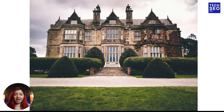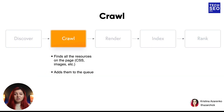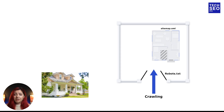Imagine you're coming to a huge mansion you discovered. It's amazing and beautiful, and you're very excited about all the photos you're going to take — but there is a high fence around the mansion, and in order to get inside you need to go through the gates. That's what robots.txt does. It's like the gates of your website that show Googlebot if it's allowed to crawl the website, and if it is, what pages are allowed to be crawled and what pages are disallowed. In our story, pages are rooms in the mansion that you want to photograph.